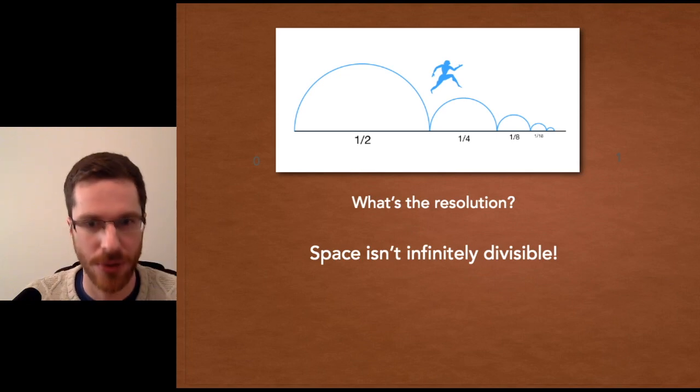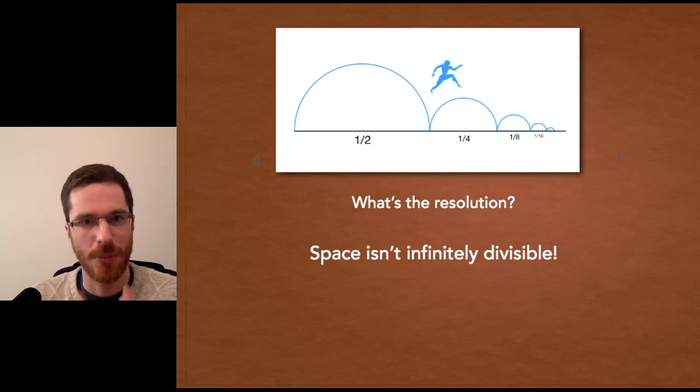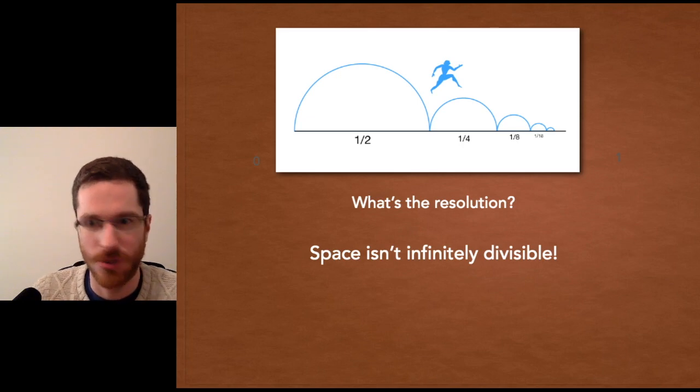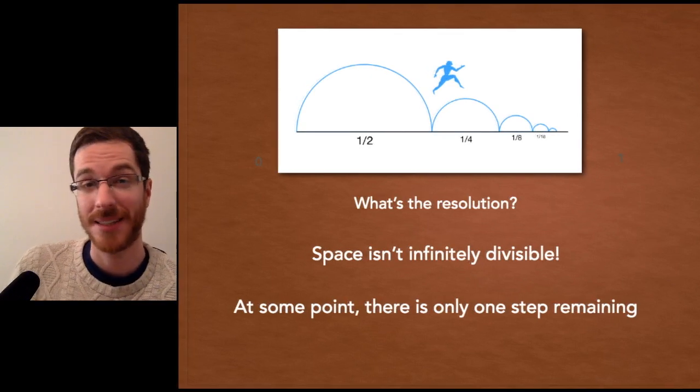The best analogy is to pixels on your computer screen. Between two pixels, there isn't the middle pixel. It's a pixel side by side to another pixel. That's fine. That actually solves all of Zeno's paradoxes. All we need is space to be discrete. And it's no more complex than that.